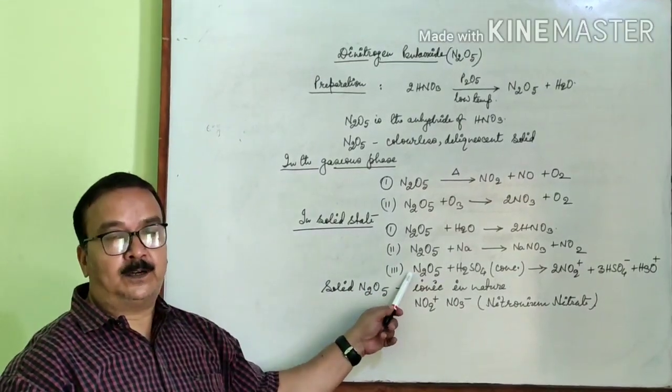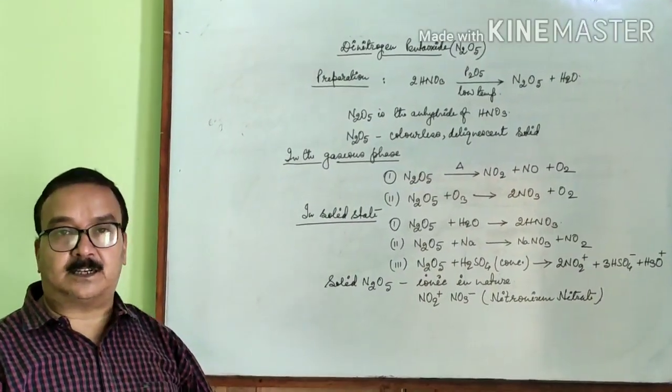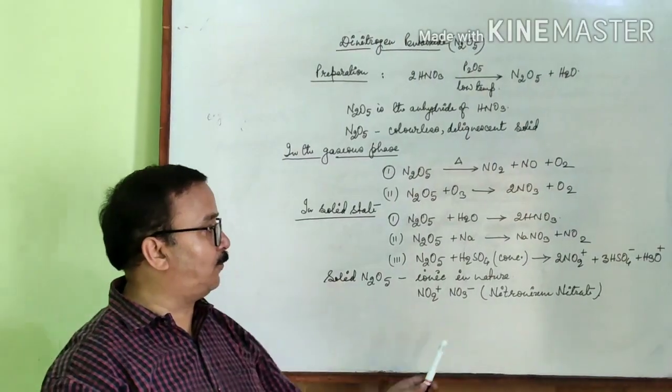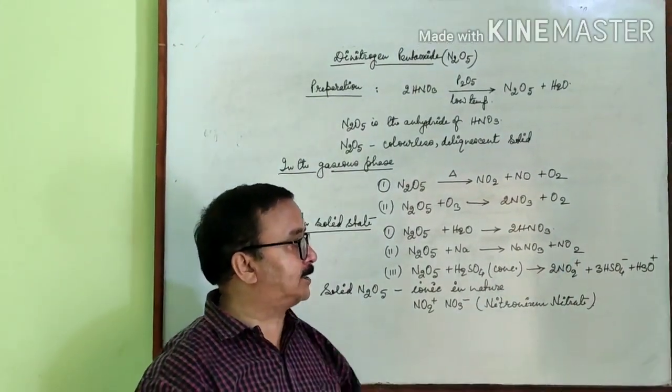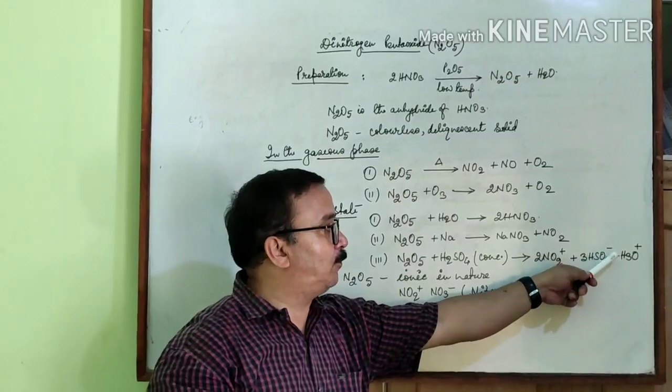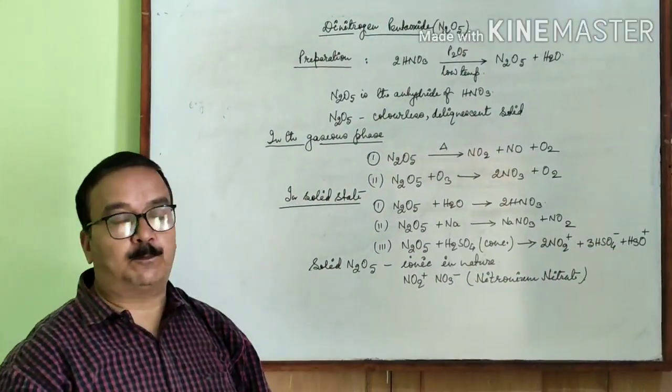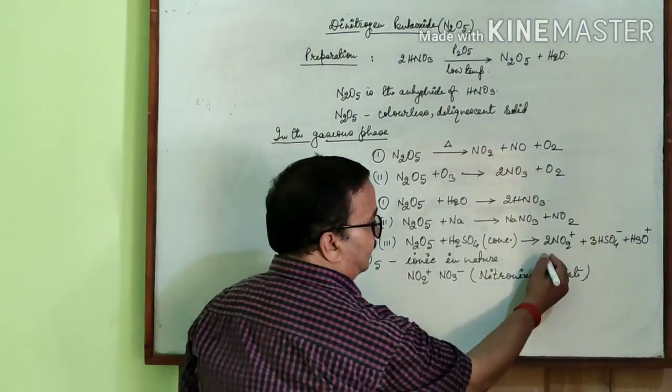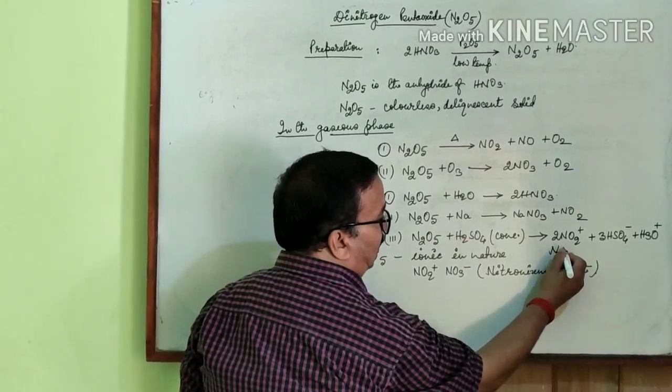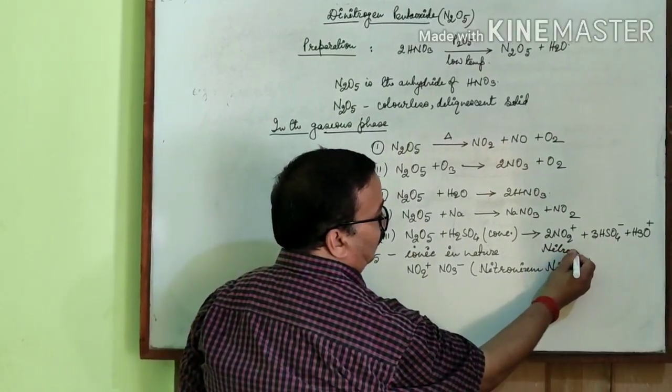And third one is that N2O5 reacts with concentrated sulfuric acid H2SO4, forms 2NO2+ + HSO4- + H3O+. NO2+ is nitronium ion.